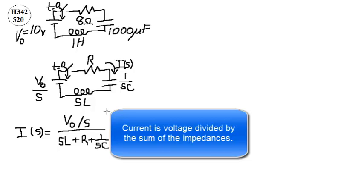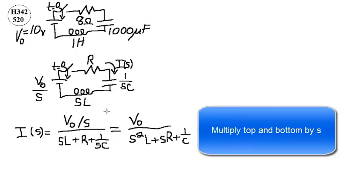Current is voltage divided by the sum of the impedances. Multiply top and bottom by S.